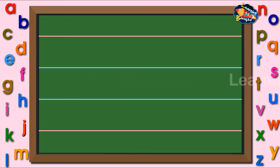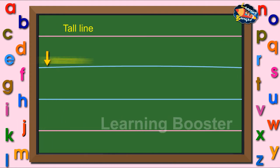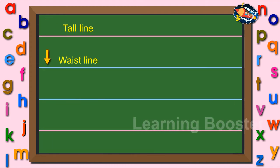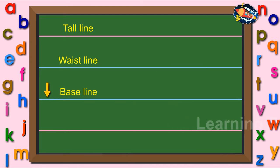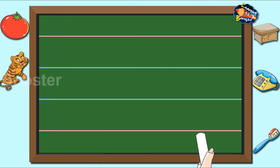We learned to write small letters A to Z using red and blue lines. Look at the two red and two blue lines. Each has a name: tall line, waist line, base line, and tail line.